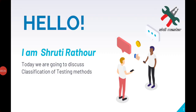Hello everyone, welcome back to our channel Skill Master. I am Shruti Rathour. We will continue Unit 7 of the second lesson — the second part. In the last class we covered the purpose of conducting tests, why tests are useful, characteristics of tests, and the two main testing methods: standardized and non-standardized.